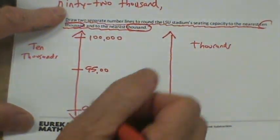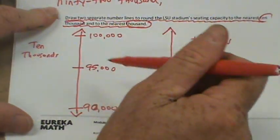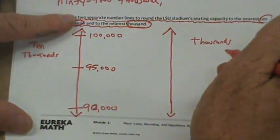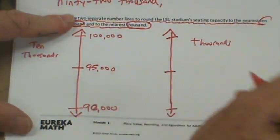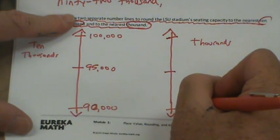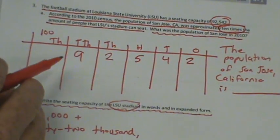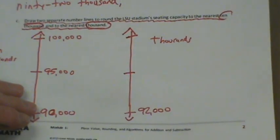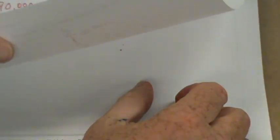Your job is to put the capacity of the stadium on the number line and circle either 90,000 or 100,000. The thousands place. I'm going to put my end points and my midpoint. And my bottom one, I'm going to put 92,000. Because remember, my capacity is 92,542. You finish off the rest of that one.